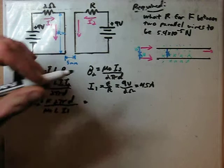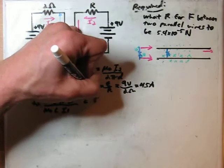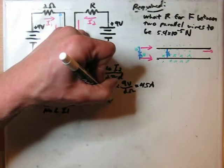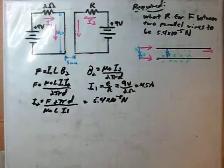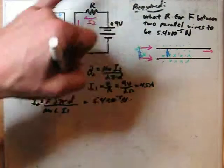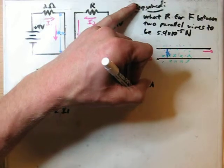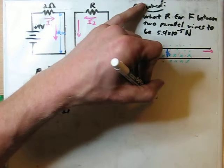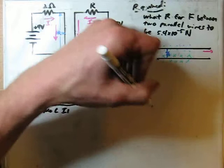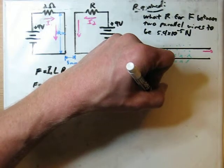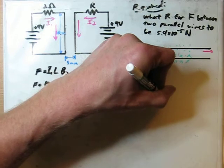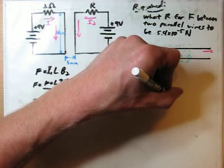And then this 2 up here cancels as well. So we have 5.4 times 10 to the negative 5th newtons. Let's see, we'll just write all that in and cancel it out. 2 pi times, we need to keep our 5 millimeters in meters, so that's going to be times 0.005 meters.